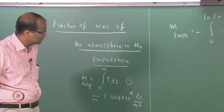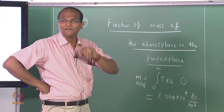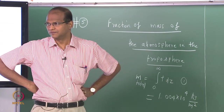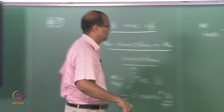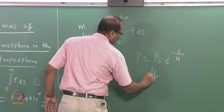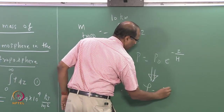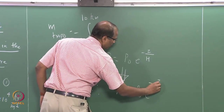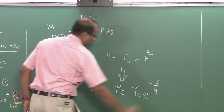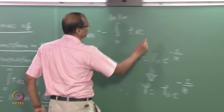In an earlier class, we discussed that the variation of density and pressure with height are similar. Therefore, everything falls in place. We will assign some equation numbers.